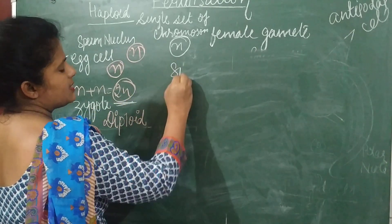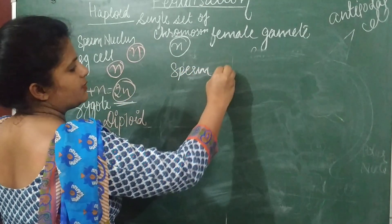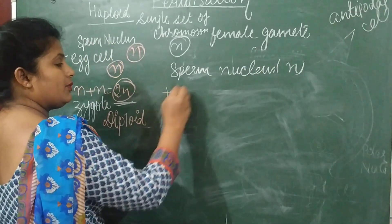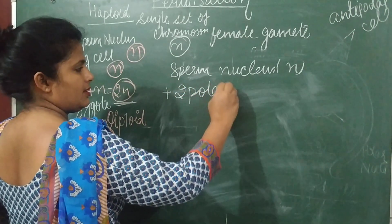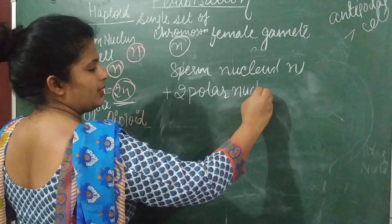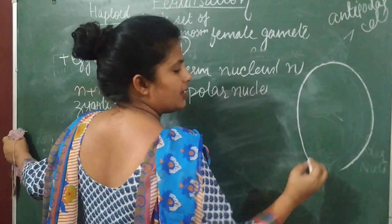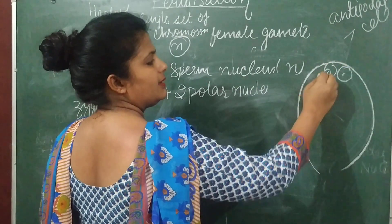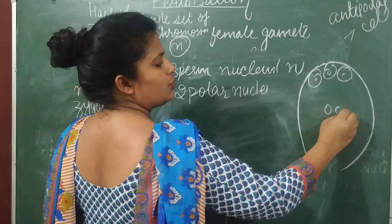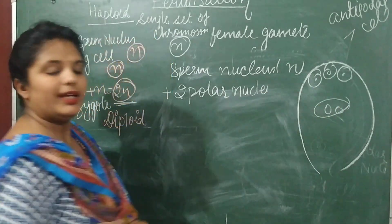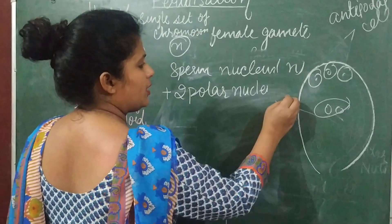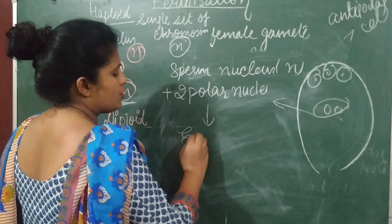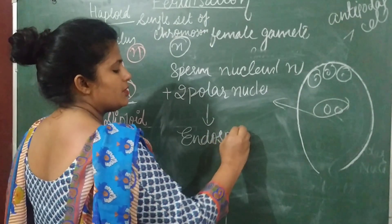The other sperm nucleus, which contains n chromosomes, combines with the two polar nuclei. There are two polar nuclei in the embryo sac. These polar nuclei combine to form the endosperm nucleus. So the sperm nucleus and the two polar nuclei combine to form the endosperm.